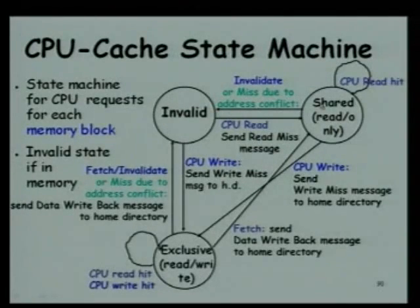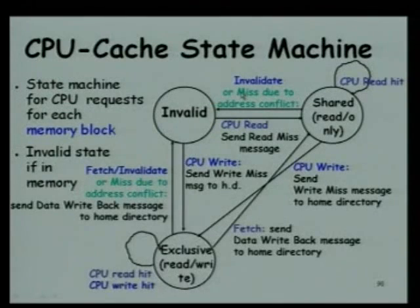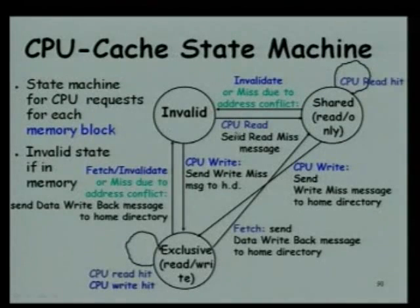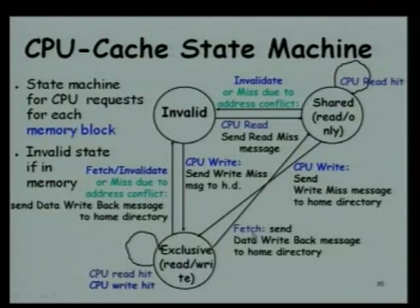In each state — invalid, shared, and exclusive — we are just mentioning the requests that the processor might get, either due to a local request or a request from the memory controller. No processor directly requests another processor, unlike in Snoopy. It is always via the memory controller. All these are either generated by the local node or they are requests from the memory controller to fetch.